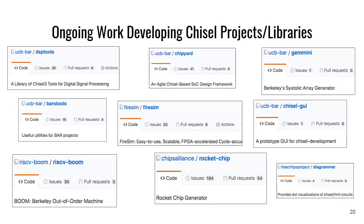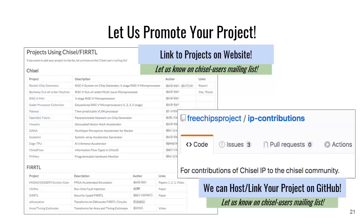BOOM is still actively being developed. Barstools is a collection of FIRRTL transformations. RocketChip is well-known. Diagrammer is cool — it enables you to generate dot visualizations of your circuit showing how registers, wires, and connections all relate. On the community tab, we are collecting lots of different Chisel repositories and projects, so if you don't see yours there, send us an email on Chisel users and we'll add you to the website to help promote you. We're also starting IP contributions — if you want us to host your project or link to it, we'll build it against our releases to make sure it doesn't break, and if it does, we'll notify you so you can fix it.